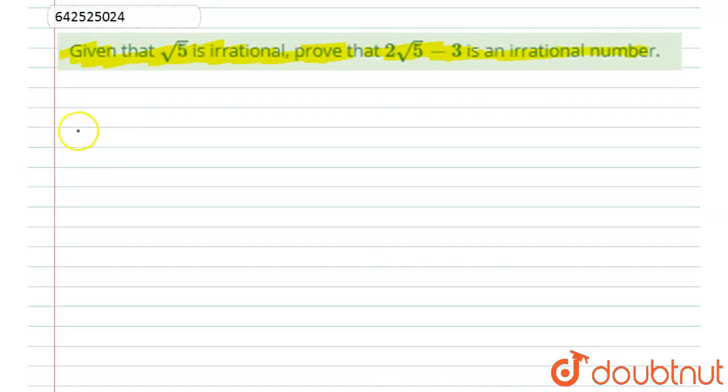So let's start with the solution. First of all, what is given to us? We have given that √5 is an irrational number, and we have to prove 2√5 - 3 is an irrational number.